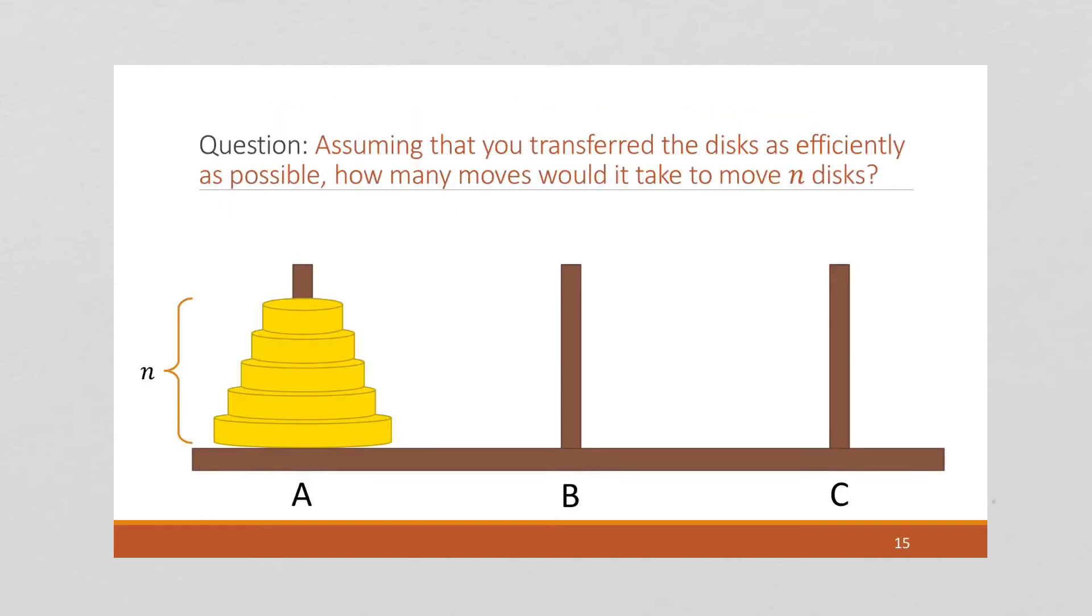So now let's go back through our algorithm, except we're going to give a name to the number of moves needed. So I'm going to say, let m sub n be the number of moves needed to move n disks, right? And this is what we're looking for. This is our end goal. We want to know, what does m sub n equal?